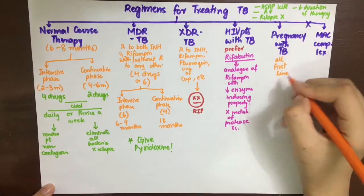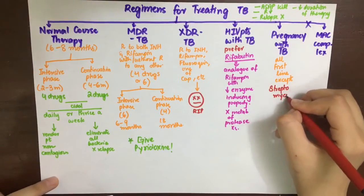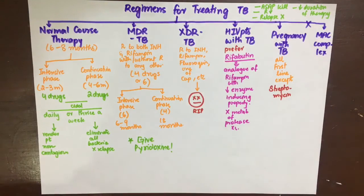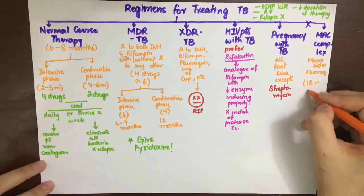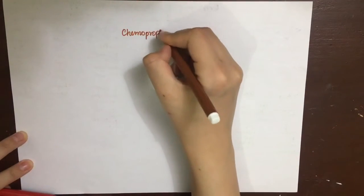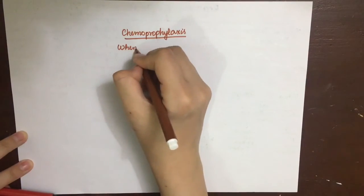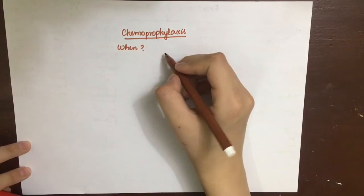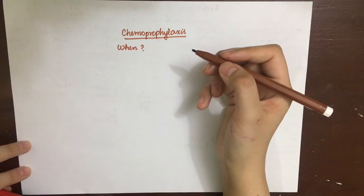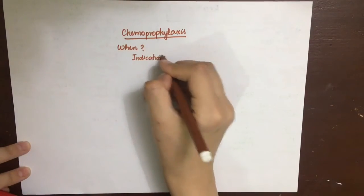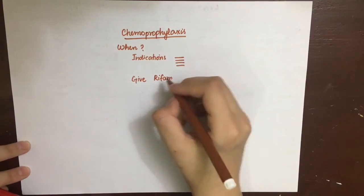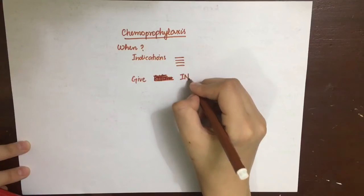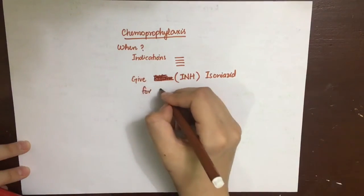Short-course therapy should be started as soon as possible after diagnosis of TB in HIV patients. In pregnancy, all first-line drugs are used except streptomycin, which is contraindicated. To eradicate Mycobacterium avium complex (MAC), macrolides — specifically clarithromycin and azithromycin — and fluoroquinolones are used for 18 to 24 months. Indications for chemoprophylaxis of tuberculosis include: a newborn of a mother with active TB, young children under six years with a positive tuberculin test, household contacts of TB patients, and patients with additional risk factors such as diabetes mellitus, malignancy, or AIDS. Chemoprophylaxis uses isoniazid for about six months.